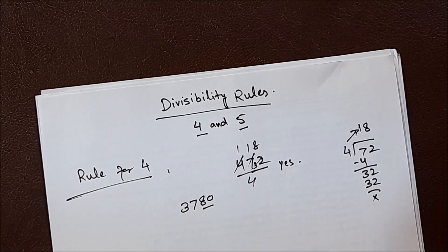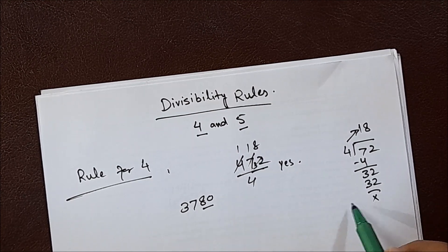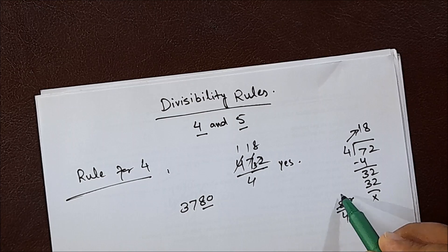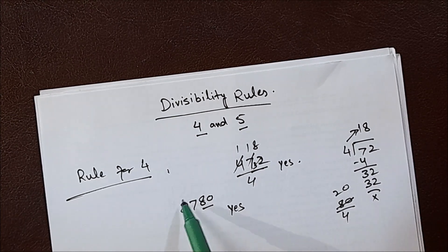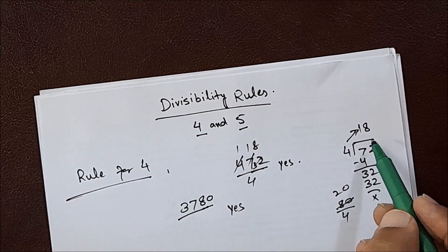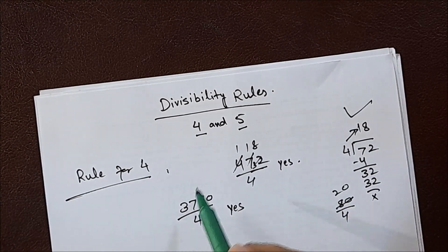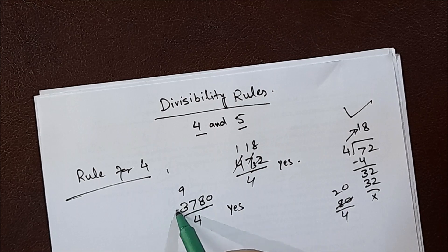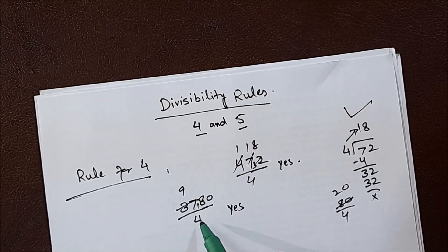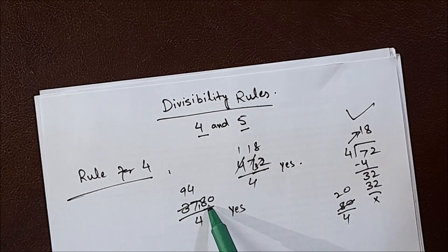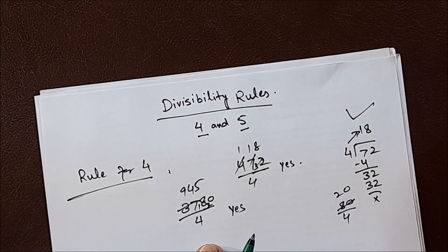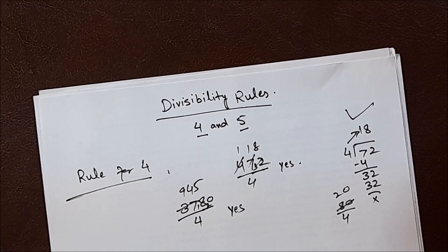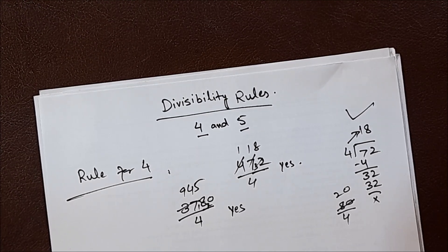We will see the unit and tens of 3780. If they are divisible by 4, we will say the whole number is divisible by 4. So is 80 divisible by 4? Yes it is, so this number is divisible. You can use the division method to check — 4 nines are 36, 1 will come here, 4 fours are 16, 2 will come here, 4 fives are 20. Therefore, if the unit and tens of a number are divisible by 4, the whole number is divisible by 4.